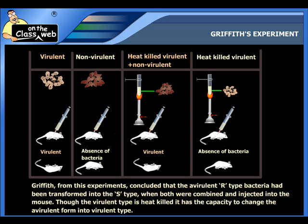Thus, Griffith concluded from his experiments that the avirulent R-type bacteria had been transformed into the S-type when both were combined and injected into the mouse. Though the virulent type is heat-killed, it has the capacity to change the avirulent form into the virulent type.